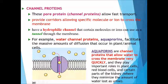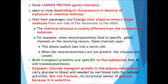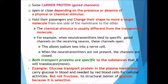The second type of transport protein is the carrier protein, also known as a gated channel. Carrier proteins can open and close depending on the presence or absence of physical and chemical stimuli, and they change shape to move the target molecule from one side of the membrane to the other. For example, when a neurotransmitter binds to a specific gated channel on a receiving neuron, the channel opens allowing sodium ions into the nerve cell. When the neurotransmitter is absent, the channel is closed.